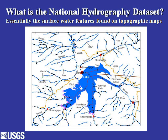This is basically what the NHD is all about — things like lakes and streams. In this map, we have a large lake with a big stream network around it. You can see there's a ditch, diversion tunnel, a marsh, stream gauges, and dams. It's the kind of information you would find on a USGS topographic map — basic features that make up the surface water hydrography of the United States.